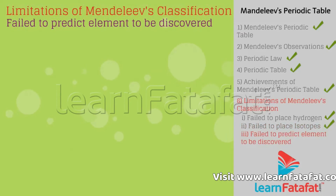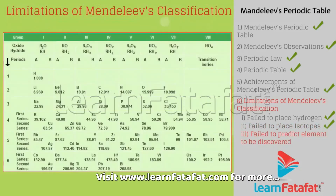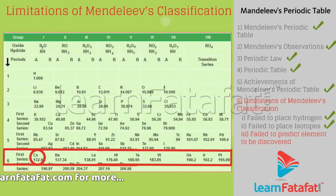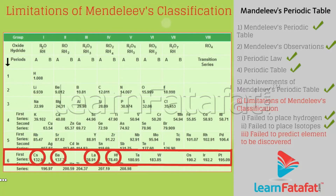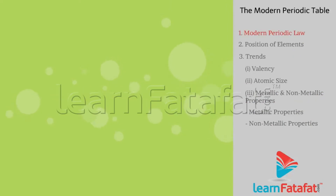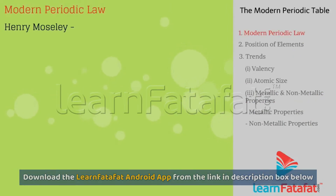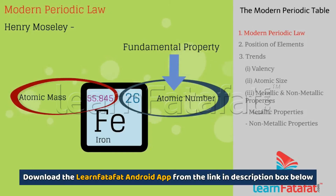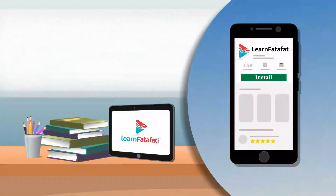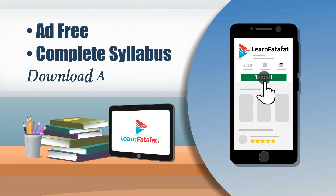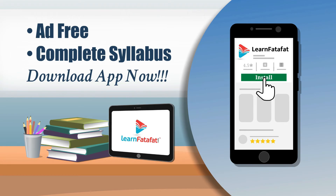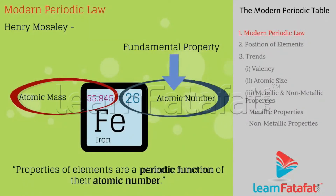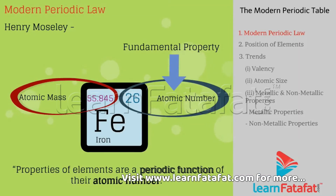Failed to predict elements to be discovered: atomic masses did not increase in regular intervals, thus it was not possible to predict the number of elements to be discovered. The Modern Periodic Table: Henry Moseley showed that atomic number of an element is a more fundamental property than its atomic mass. Modern Periodic Law: properties of elements are a periodic function of their atomic number.